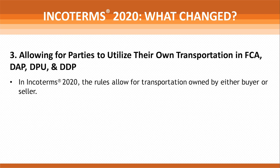Number three: under 2010 rules, the assumption was that a third-party carrier would be responsible for transporting goods between the buyer and seller. A change in the 2020 guidelines is that the rules now allow for transportation owned by either the buyer or the seller in FCA, DAP, DPU, and DDP.